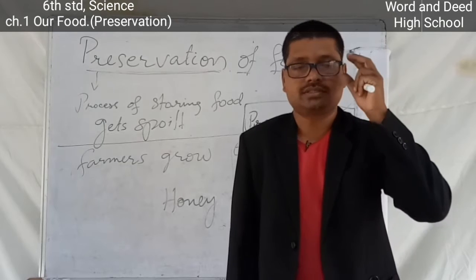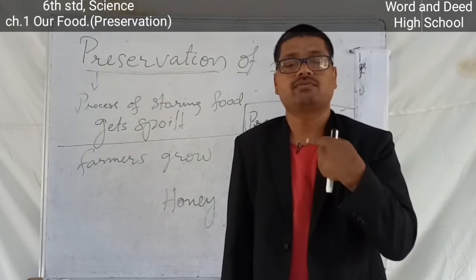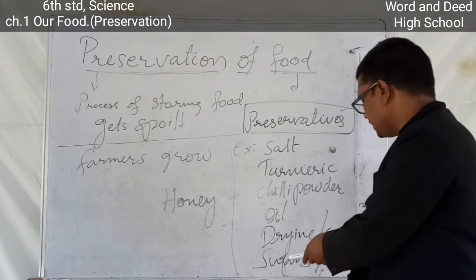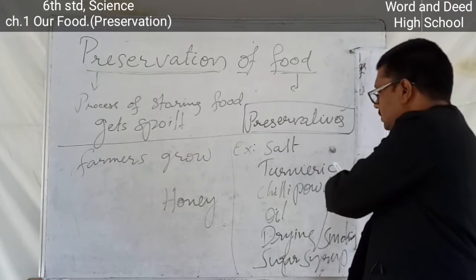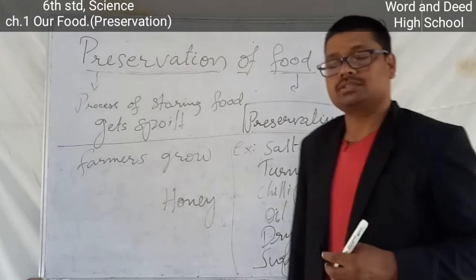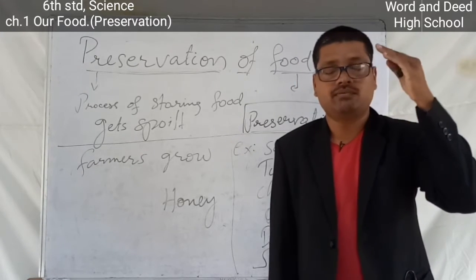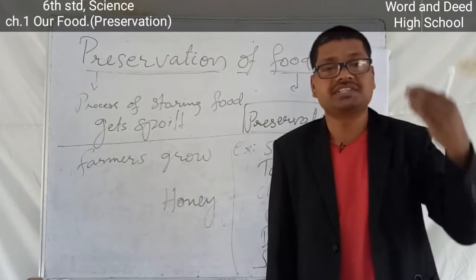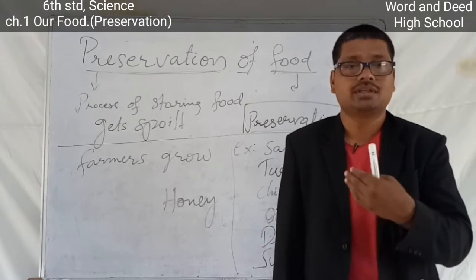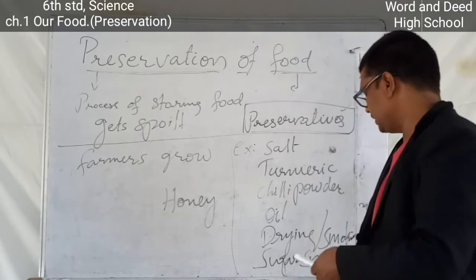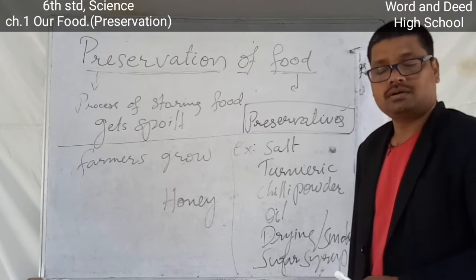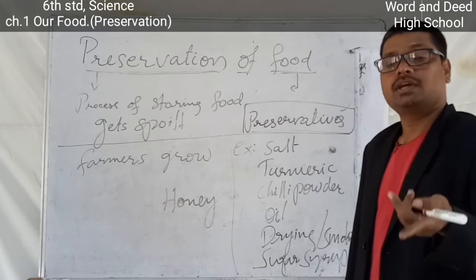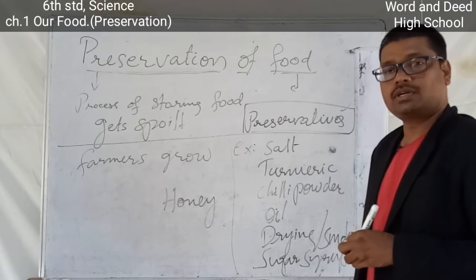Here is your assignment: using these food ingredients and methods — like drying, smoking, salt, turmeric, chili powder, oil, and honey — find the foods that we preserve using these ingredients and preservation methods. You need to complete this and be prepared for the next class with your work fully done.